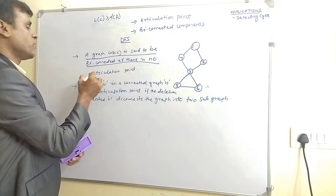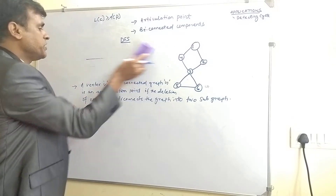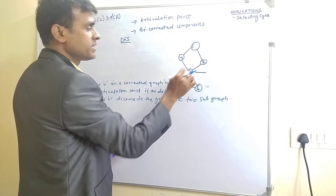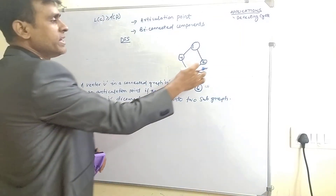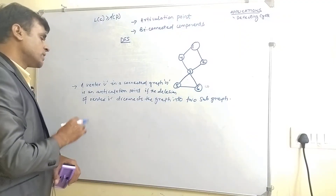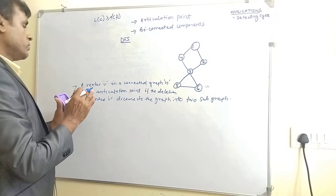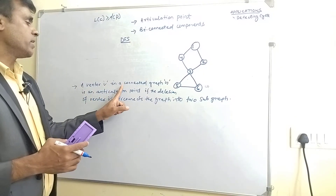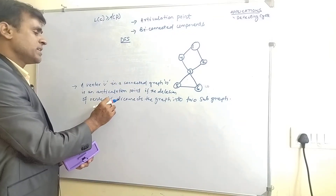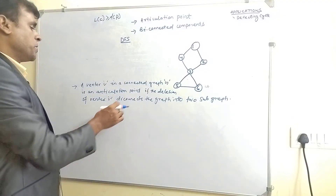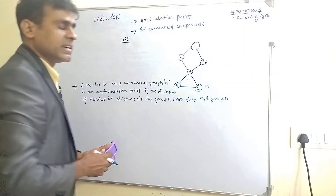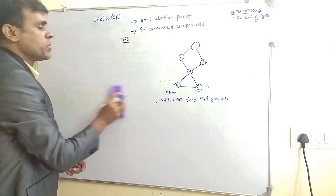In this graph, vertex 3 is the articulation point because if you delete vertex 3, the graph is divided into two sub-graphs. But if you delete vertex 2, it is not an articulation point, and if you delete vertex 6, it is also not an articulation point. So vertex V in a connected graph G is an articulation point if deleting that vertex along with all its connecting edges disconnects the graph into two sub-graphs.